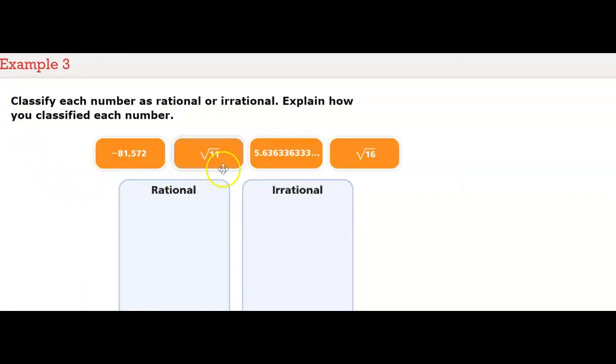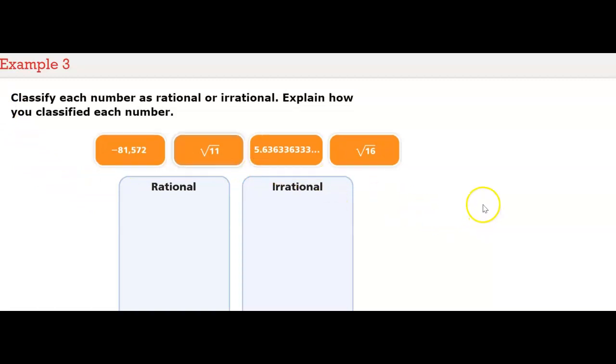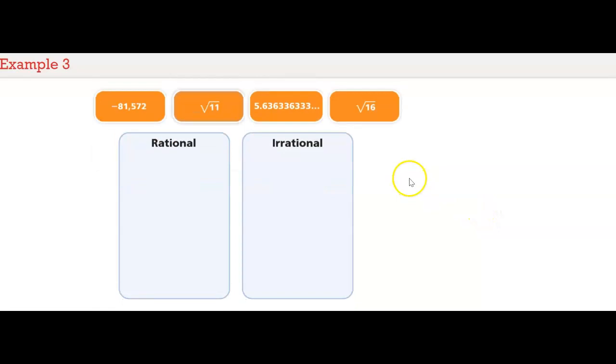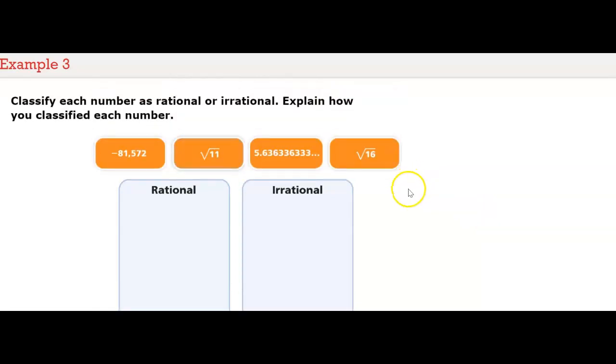Classify each number as rational or irrational. Explain how you classified each number. Negative 81,572. The square root of 11. 5.636336333 and so on. The square root of 16.